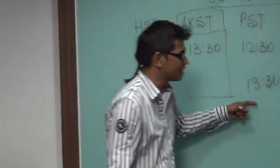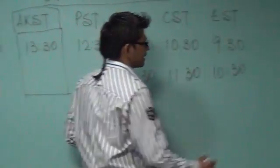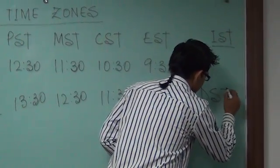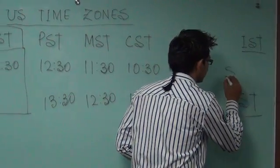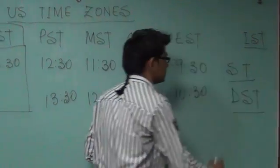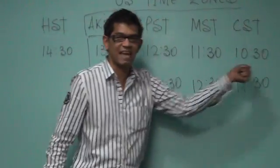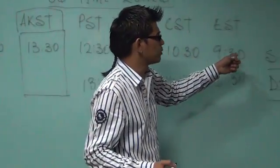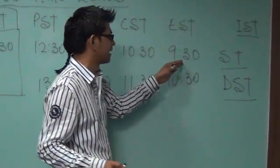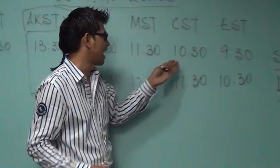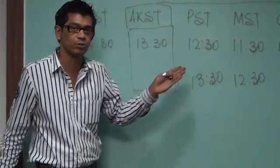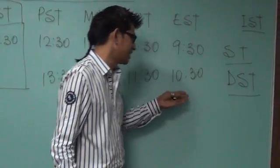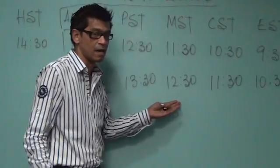To summarize: during standard time, the difference between IST and the US time zones is nine and a half, ten and a half, eleven and a half, and twelve and a half hours. During Daylight Saving Time, the differences are ten and a half, eleven and a half, twelve and a half, and thirteen and a half hours.